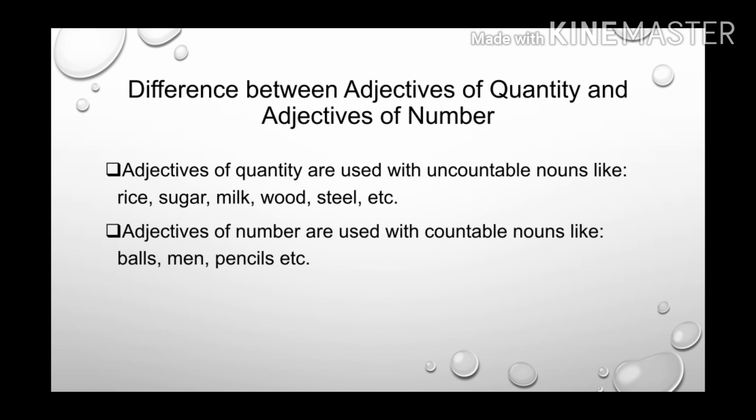Now how to know the difference between adjectives of quantity and adjectives of number? It is very simple. Adjectives of quantity are used with uncountable nouns — the nouns which cannot be counted — for example, rice, sugar, milk, wood, steel, etc. And adjectives of number are used with countable nouns — the nouns which can be counted — for example, balls, men, pencils, etc.